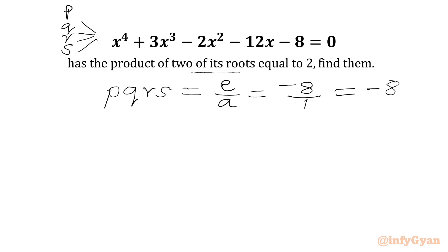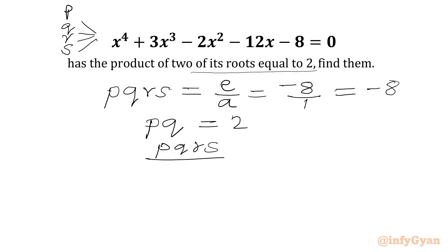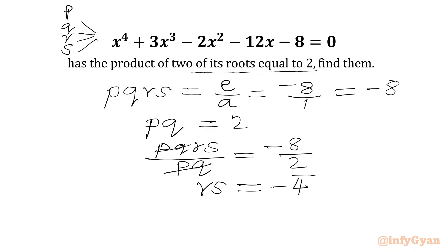As per the problem, the product of two of its roots equals 2. So if I write P·Q·R·S divided by P·Q, that will be negative 8 divided by 2. The P·Q terms cancel, and we get the product of the remaining two roots equal to negative 4. So product of P and Q is 2 (given), and product of R and S is minus 4.